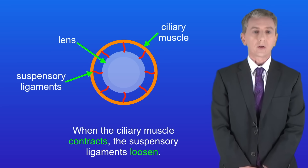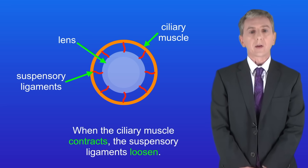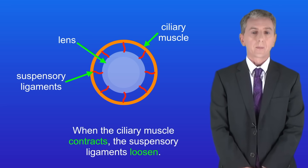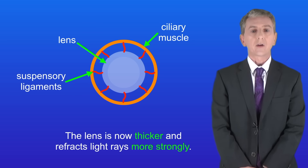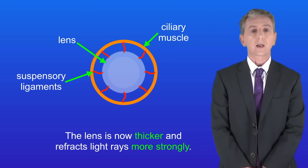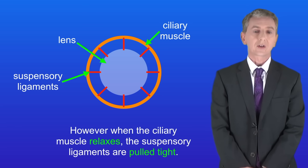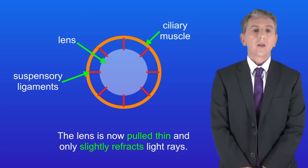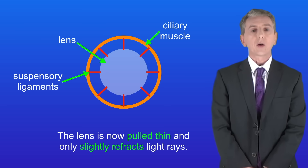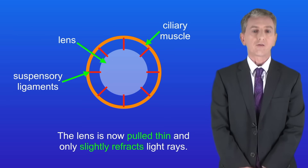When the ciliary muscle contracts, the suspensory ligaments loosen, and the lens is now thicker and refracts light rays more strongly. However, when the ciliary muscle relaxes, the suspensory ligaments are pulled tight, and the lens is pulled thin and only slightly refracts light rays.